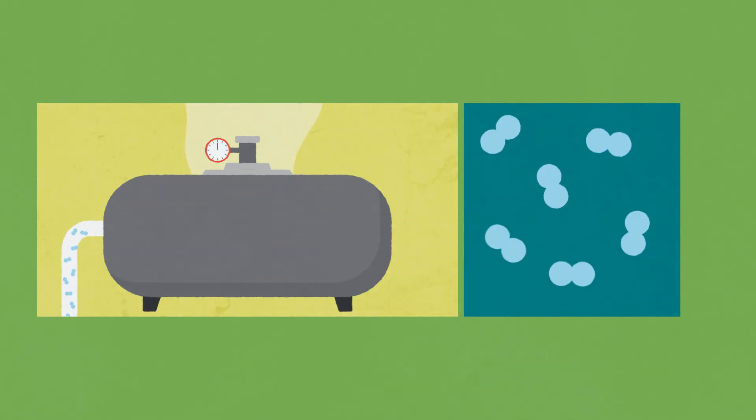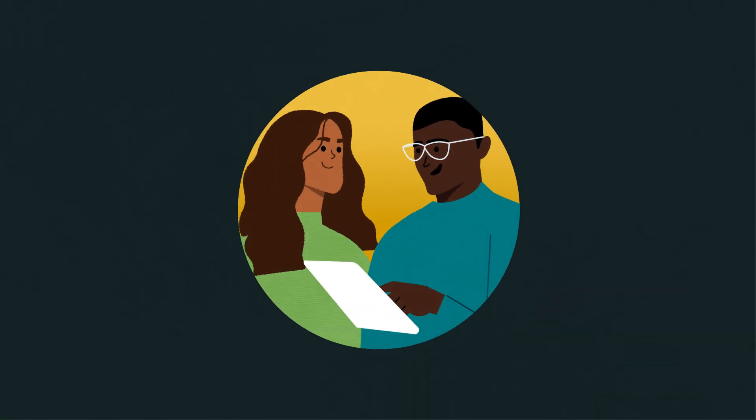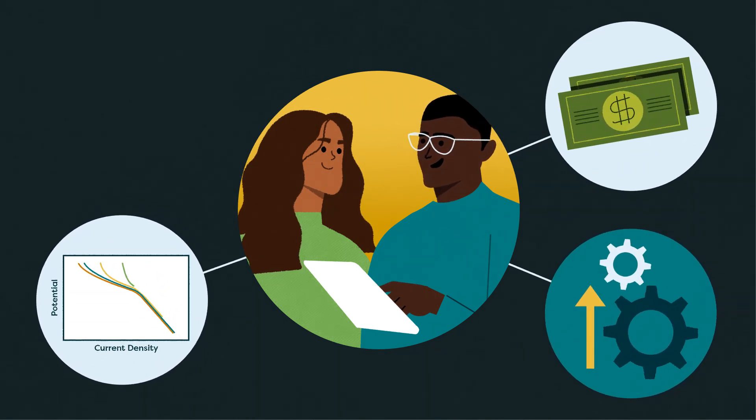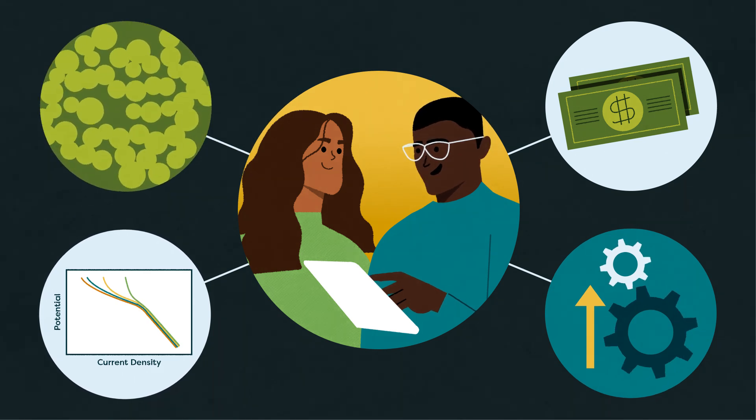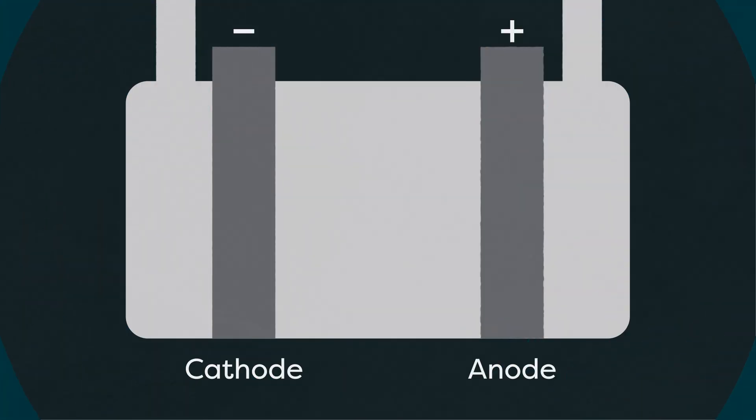Berkeley Lab scientists are working to make electrolyzers as efficient and affordable as possible by engineering and testing devices with new materials and unique designs. One of our most promising concepts is called a metal-supported cell. These devices are within a class of electrolyzers made entirely of solid materials.